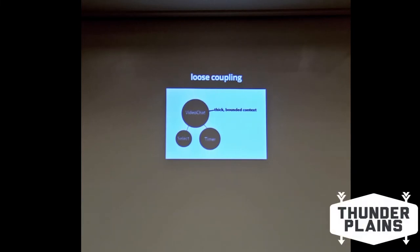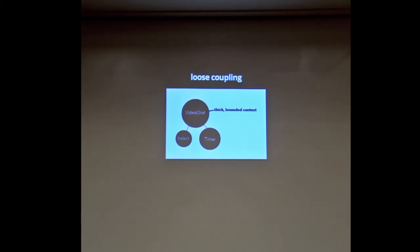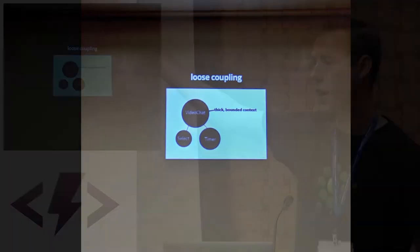Bounded context is an idea from domain-driven design, popular in the J2EE era — having contracts or interfaces around components so they can talk to each other, but you can't just randomly reach into one from another with no verification. Modules in JavaScript on the front end give you some kind of loose coupling.